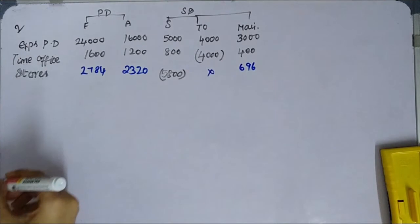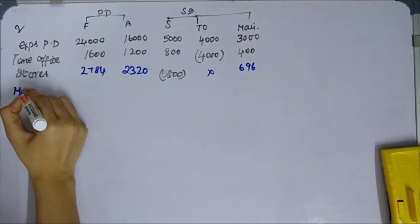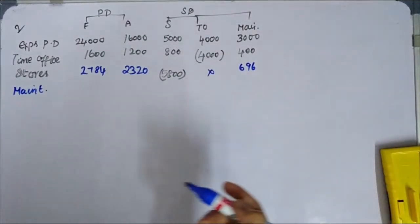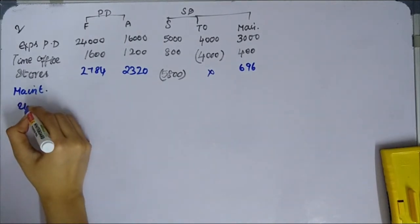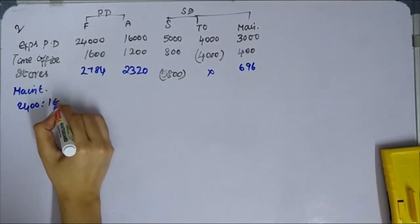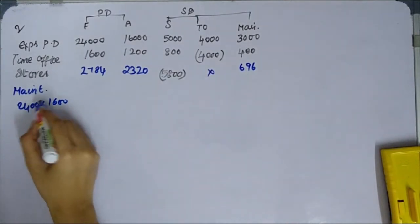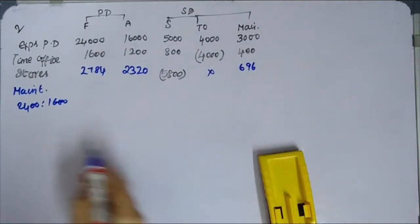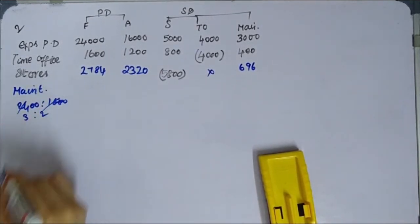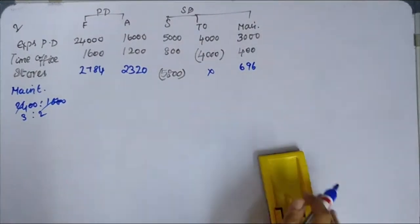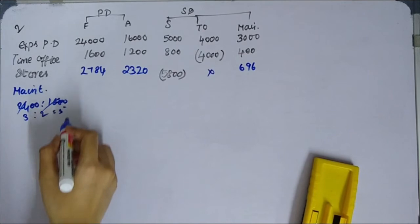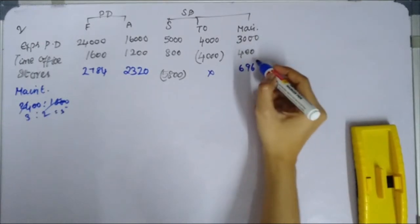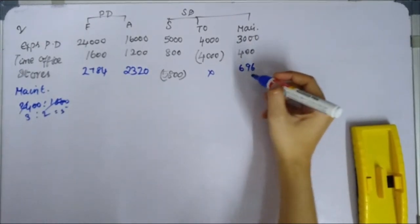Third priority: machine hours for Maintenance. Machine hours are Fabrication 2,400 and Assembly 1,600, giving a ratio of 3:2. Maintenance total is apportioned accordingly. The calculated values come to approximately 3,500 and 3,400, giving a total of around 4,096 for maintenance distribution across fabrication and assembly.